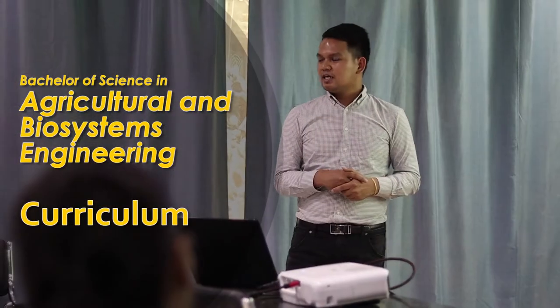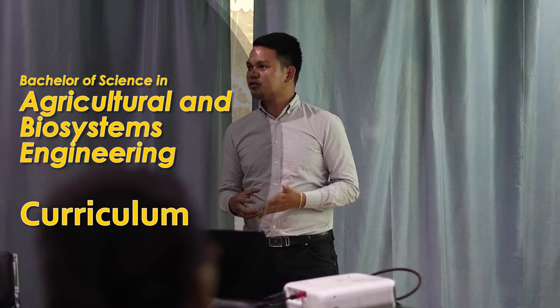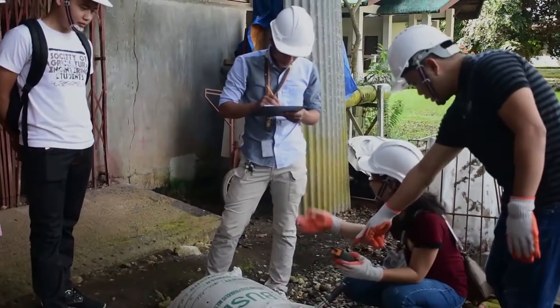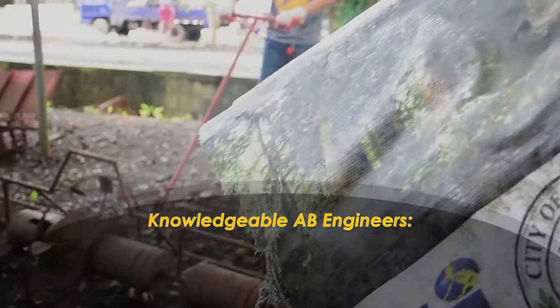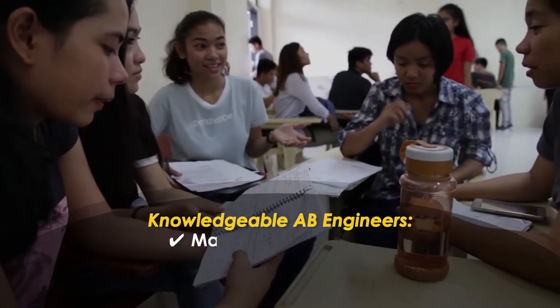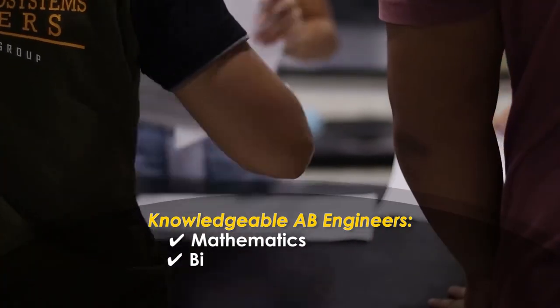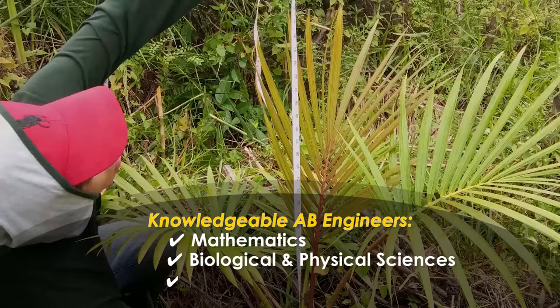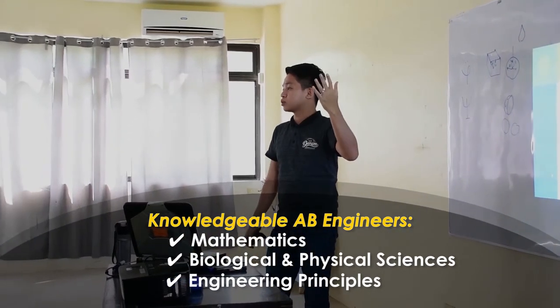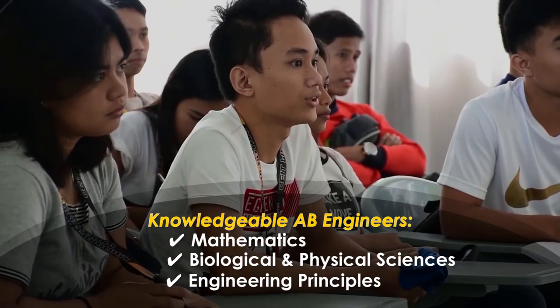The Bachelor of Science in Agricultural and Biosystems Engineering Program is a four-year curriculum which was designed to develop Agricultural and Biosystems Engineers who are uniquely qualified to use their knowledge in mathematics, biological and physical sciences, and engineering principles. The said curriculum is categorized into technical and non-technical courses.